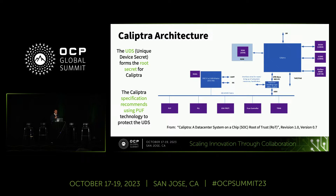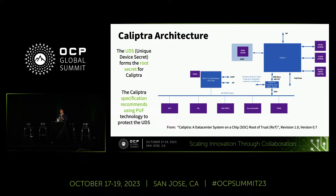Here is a high-level picture of the Calyptra architecture with several blocks: the CPU, ROM, SRAM, and so on. Below, there is the XI bus with several components including a TRNG, PLLs, and also a PUF. The unique device secret forms the secret root for Calyptra. The Calyptra specification recommends using a PUF to generate and protect the unique device secret — two birds with one stone.